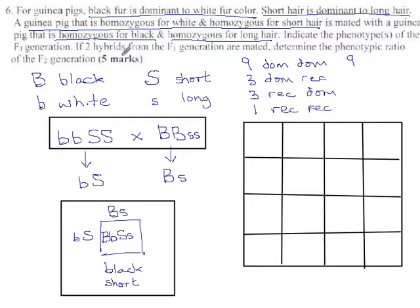So what does that mean for these traits? It should mean we get nine who are black short, not too surprising since both parents are black short. We'll get three who are dominant for the first thing, recessive for the second, so black but long. Black long. We should get three who are recessive for the first thing and dominant for the second, so white short. And we should get one who is recessive for both things, so white long hair.